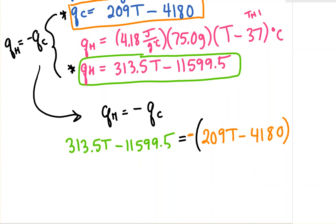I'm going to gather up my T's on one side and divide. Just algebra. Working through this gives 522.5T equals 15779.5, so T equals 30.2 degrees Celsius.